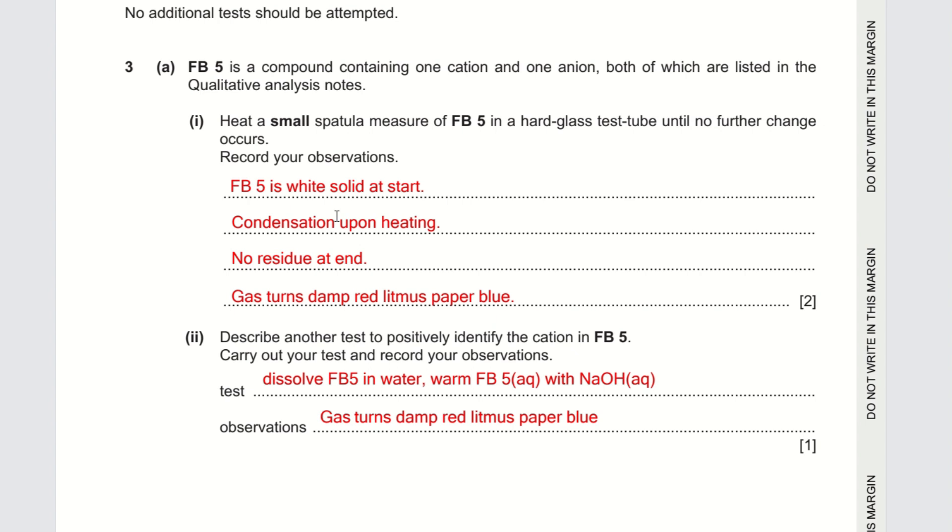Heating of FB5 leaves no residue at the end, so write down no residue. Since there's no residue we cannot describe the color, and there's no jumping of solid so we do not have to record that down.